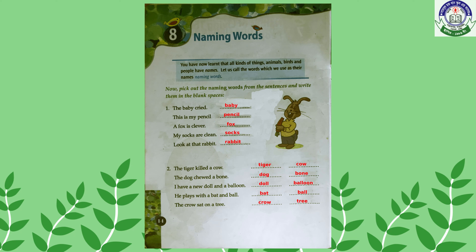Unit 8: Naming Words. Naming words means the name of anything — the name of anything is called a naming word. You have to pick up the naming words from the sentence and write them in the blank space. First: 'The baby cried' — the naming word is baby. Next: 'This is my pencil' — the naming word is pencil. 'A fox is clever' — the naming word is fox. 'My socks are clean' — write socks, because socks is a naming word.